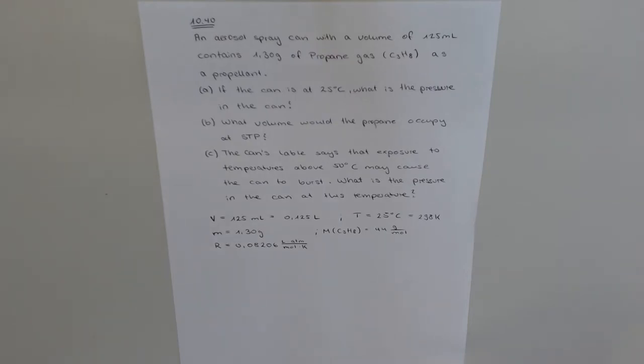Part A: If the can is at 25 degrees Celsius, what is the pressure in the can? We have our volume, 125 milliliters, which is 0.125 liters, our temperature, 25 degrees Celsius, which is 298 Kelvin.